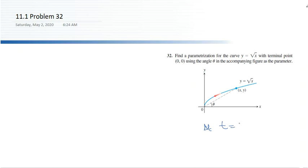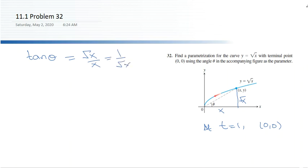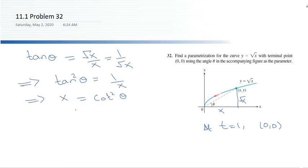If we draw a perpendicular, the curve portion is y equals √x, where y is the vertical height and x is the horizontal distance. The value of tangent theta equals √x divided by x, which equals 1 over √x. So tangent squared theta equals 1 over x, which means x equals cotangent squared theta.